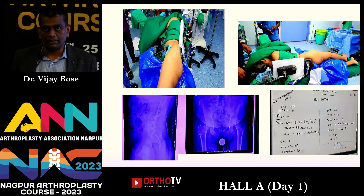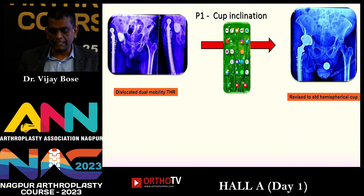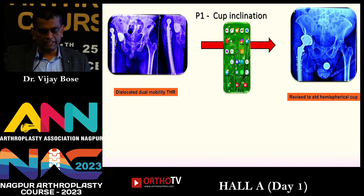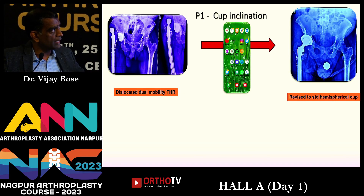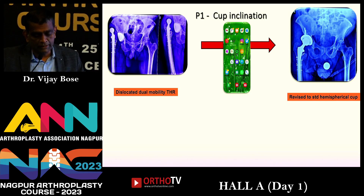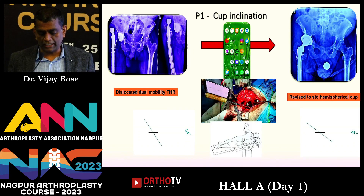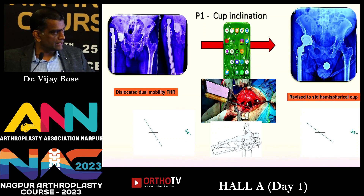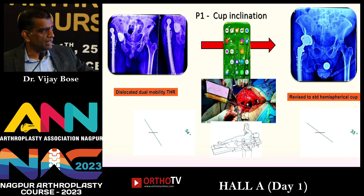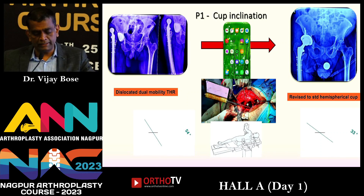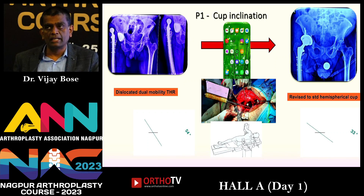Here is an example of a patient referred to me with a dislocated dual mobility cup. You can see the cup inclination was very wrong. I revised it to a standard cup — the previous inclination measured 54 degrees on the inclinometer, now it's 33 degrees — and it's been very stable since. It's very important to use these intraoperative aids.